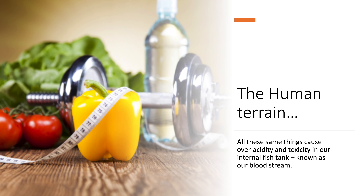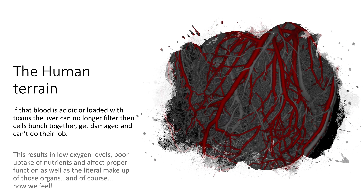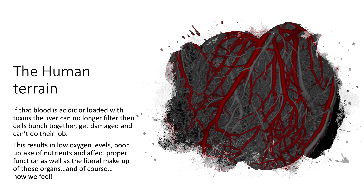The Human Terrain. All these same things cause over-acidity and toxicity in our internal fish tank, known as our bloodstream. By looking at a drop of blood under a microscope, we can see the condition of our internal state. The shapes, organization, and motility of our blood cells tell us much about why we may have certain symptoms or conditions, and give us great clues on how to reduce or eliminate them. If that blood is acidic or loaded with toxins, the liver can no longer filter. Then cells bunch together, get damaged and can't do their job, resulting in low oxygen levels, poor uptake of nutrients, and affecting proper function — as well as the literal makeup of those organs, and of course, how we feel.